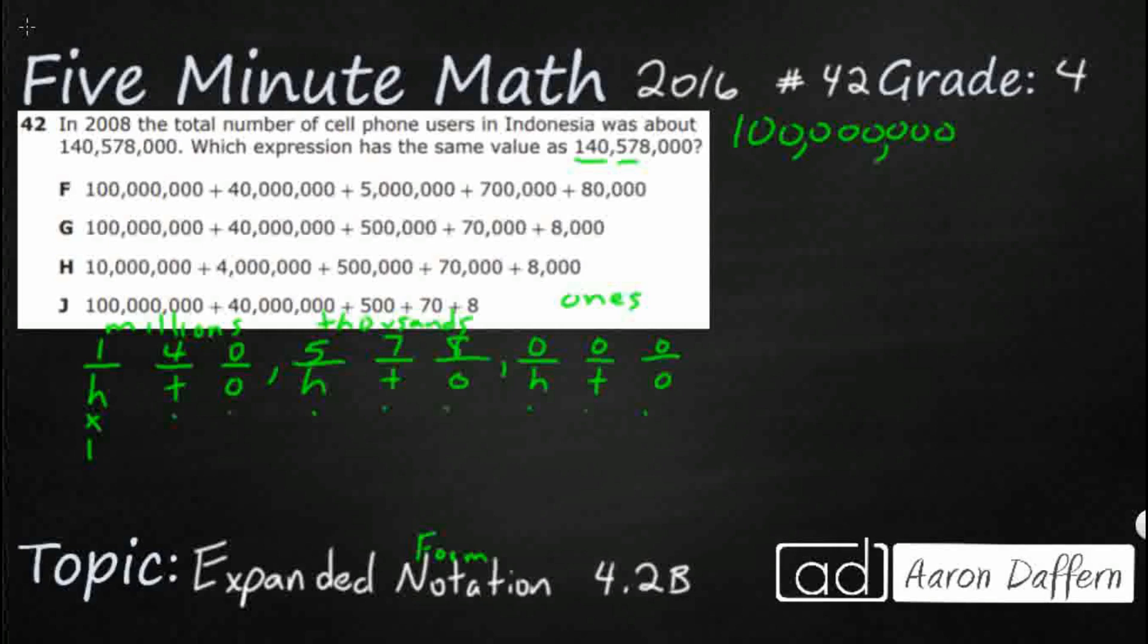Now, if we wanted to write that in expanded notation, we would just write the digit one times, and then we would write the value, which happens to be 100 million. So I'm just going to write that 100 million. So either one of these, this is expanded form up top, expanded notation below.